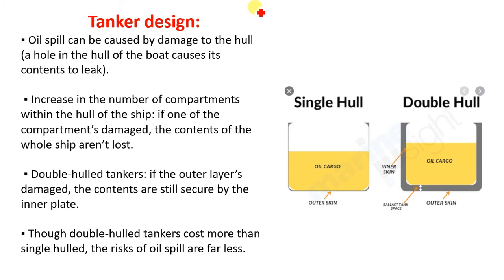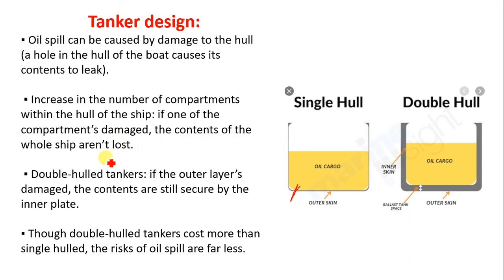Another way to prevent oil spill is through tanker design. Oil spill can be caused by damage to the hull — a hole in the hull causes its contents to leak. Increasing the number of compartments within the hull helps: if one compartment is damaged, the contents of the whole ship are not lost. It is advisable to use a double hull — if the outer skin is damaged, the oil will not spill because an inner skin prevents spillage.